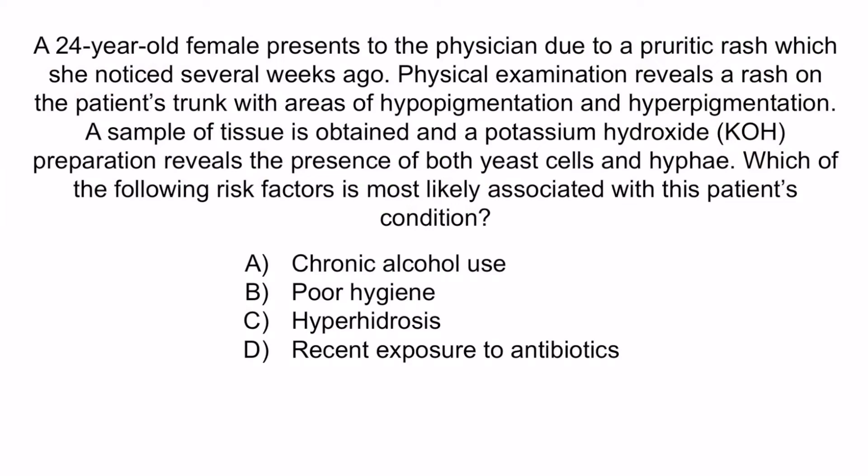A, chronic alcohol use. B, poor hygiene. C, hyperhidrosis. Or D, recent exposure to antibiotics. From the question, you notice that this patient has a pruritic rash with areas of hypopigmentation and hyperpigmentation. This should immediately make you think of Malassezia furfur and tinea versicolor. The KOH prep that has revealed both yeast cells and hyphae is describing the spaghetti and meatballs appearance of the organism. So we can be confident that this patient has a Malassezia furfur infection causing tinea versicolor.